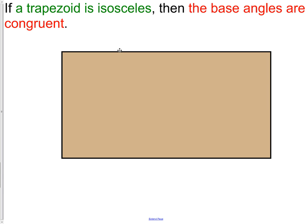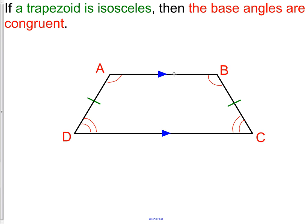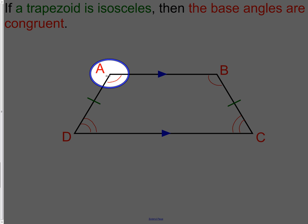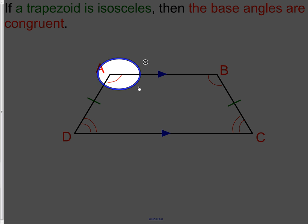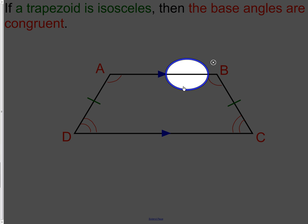If a trapezoid is isosceles, then the base angles are congruent. Again, this is only true for isosceles trapezoids. We have the opposite sides parallel and then the two legs that are congruent to each other. In this case, angle A is congruent to angle B — those two base angles are congruent.